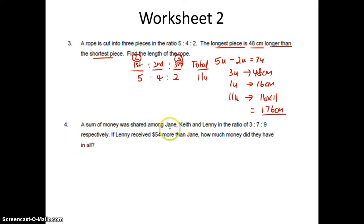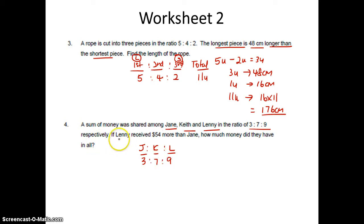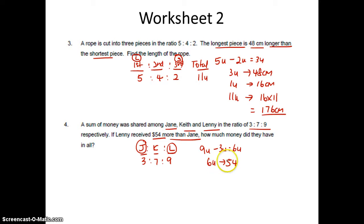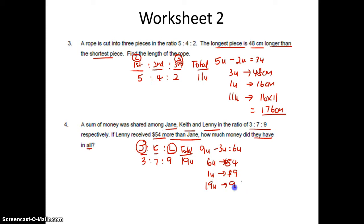Question 4. A sum of money was shared among Jane, Keith and Lenny in the ratio 3 is to 7 is to 9. If Lenny receives $54 more than Jane: Lenny is 9 units, Jane is 3 units. So 9 units minus 3 units is 6 units. 6 units is $54, so 1 unit is $9. How much did they have in all? Total is 3 plus 7 plus 9 which is 19 units. So 19 units is 9 times 19. Answer is $171.